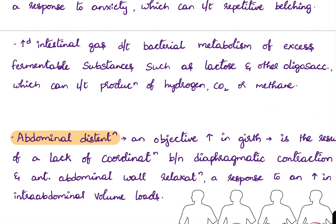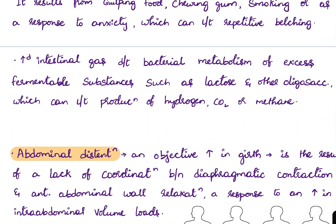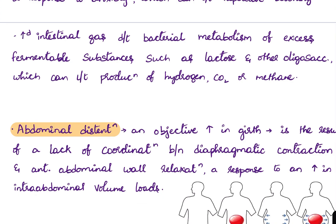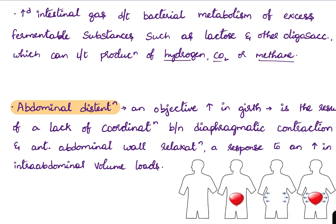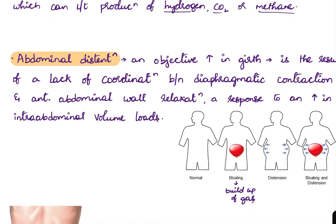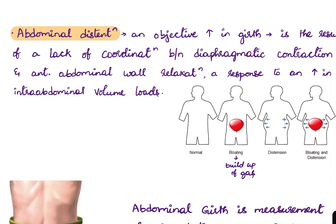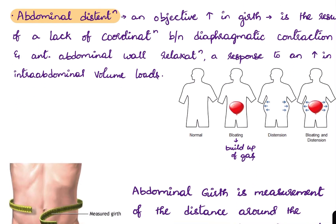Increased intestinal gas can also result from bacterial metabolism of excess fermentable substances such as lactose and other oligosaccharides, leading to increased production of hydrogen, carbon dioxide, or methane.